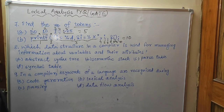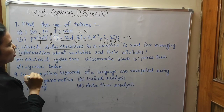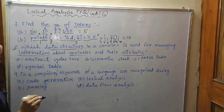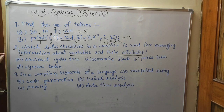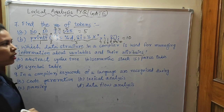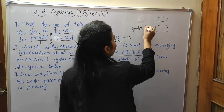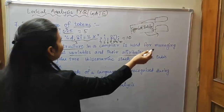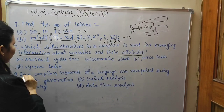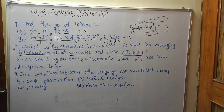Question eight: Which data structure in a compiler is used for managing information about variables and their attributes? The options are abstract syntax tree, semantic stack, parse table, and symbol table. The correct answer is symbol table, because every phase is connected to the symbol table — it stores and manages all variable data.